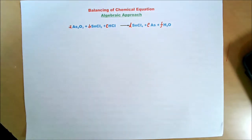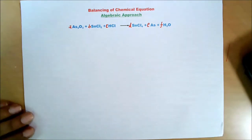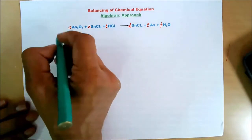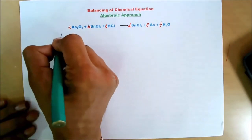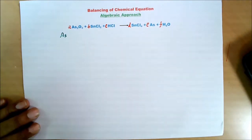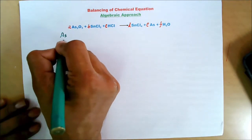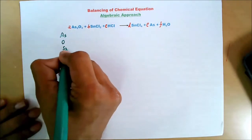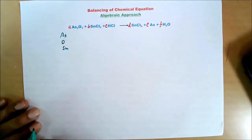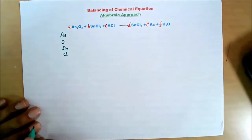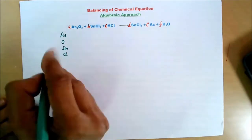First of all, I will make a list of elements participating in the reaction. Number one: arsenic. Number two: oxygen. Number three: tin. Then chlorine. Then hydrogen.